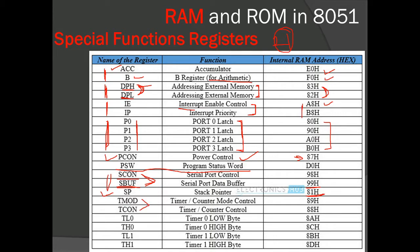Next we have TMOD and TCON — timer and counter control registers. TMOD sets the mode of the timer or counter, while TCON controls the timers and counters. The remaining four registers store the count values related to timers and counters. All six of these registers correspond to timer and counter operations. Knowing these register functions allows us to use them in programming.